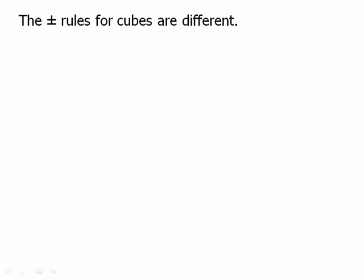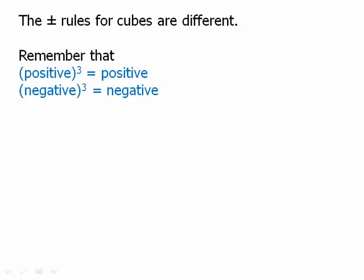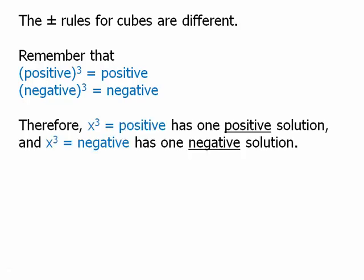By contrast, x squared equals a negative has no possible solution. x squared equals negative 9 — there's no real number that satisfies that equation. The positive and negative roots for cubes are a little bit different. If we cube a positive, we get a positive, but if we cube a negative, we get a negative. Therefore, x cubed equals a positive has one positive solution, and x cubed equals a negative has one negative solution — you don't get the problem of double roots or no solution as we got for squaring.